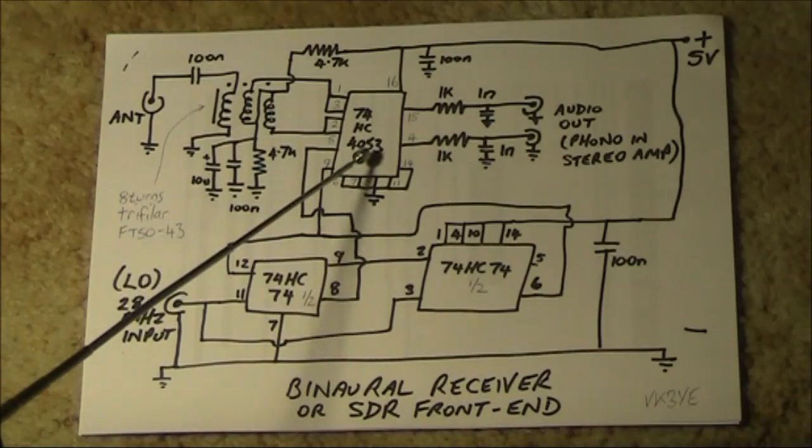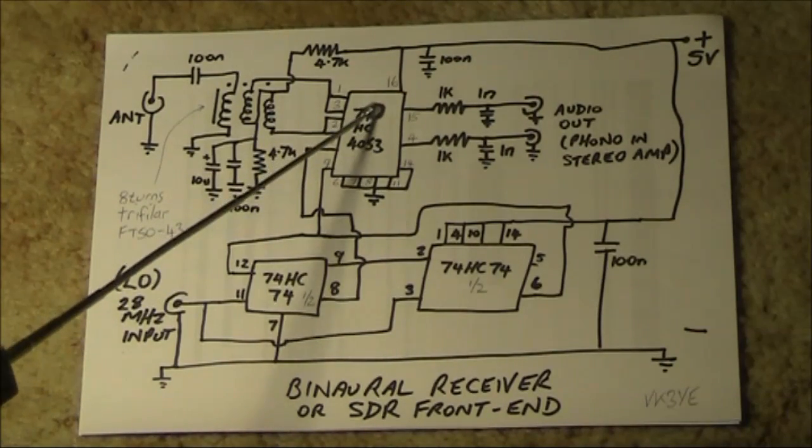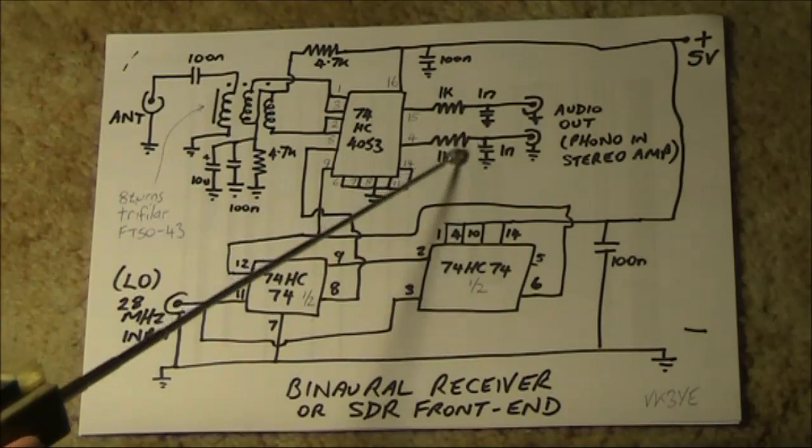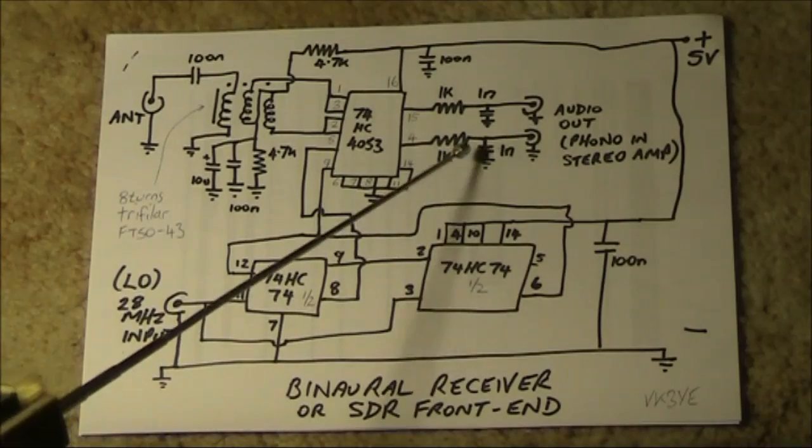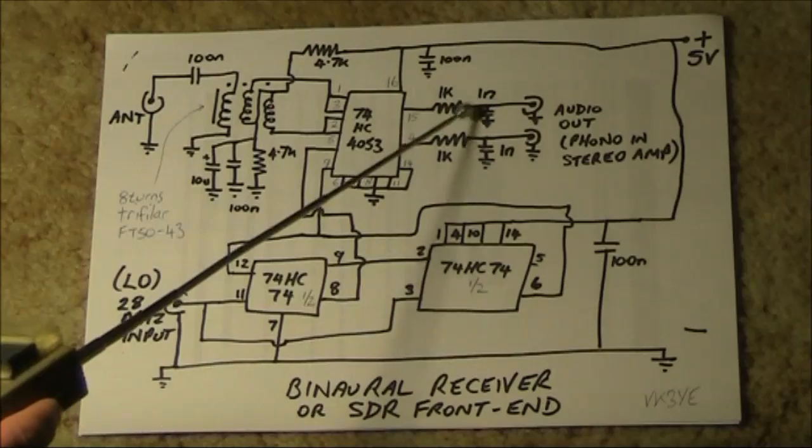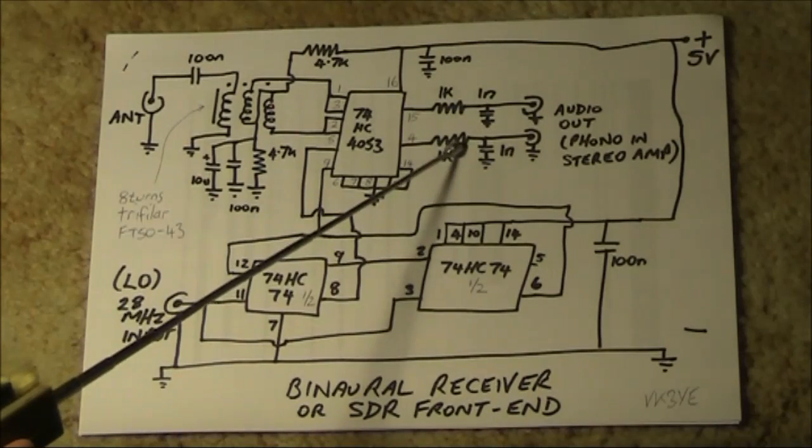Then, as this is a direct conversion receiver, the differences present themselves at the output. But here, there are two outputs. You could call one I, which stands for in phase, and Q, which is quadrature, or 90 degrees out of phase from the I.